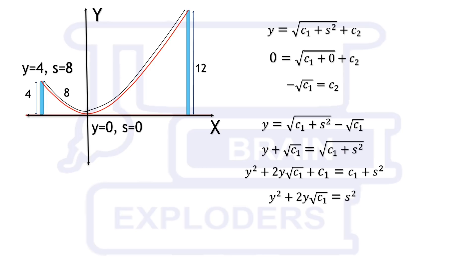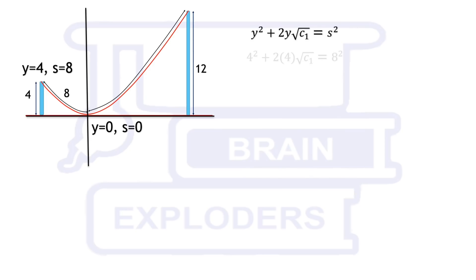Again when y is 4, s is 8. This can replace constant. Now put y equals to 12 to get s equals to 12 root 2. Therefore total length becomes 8 plus 12 root 2 meters.